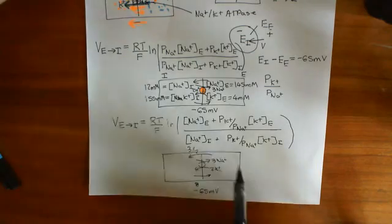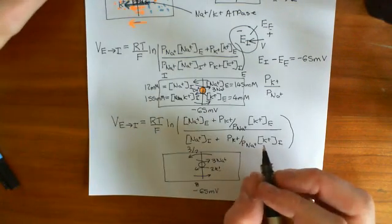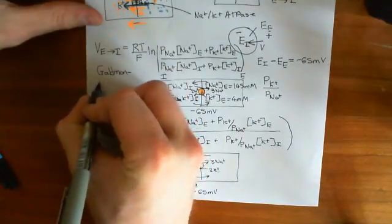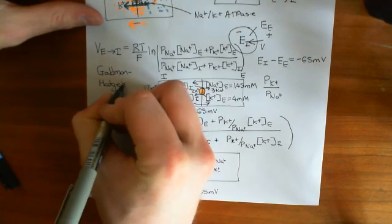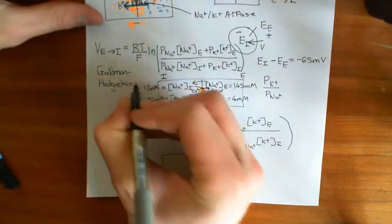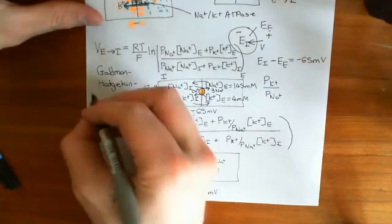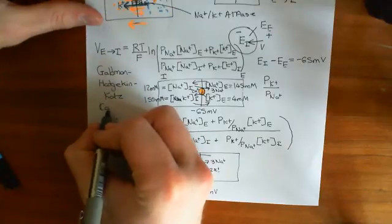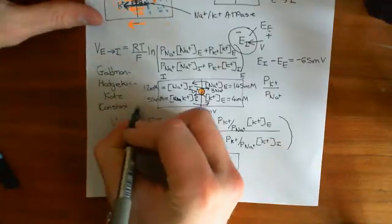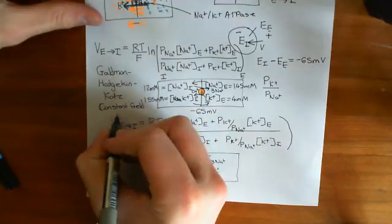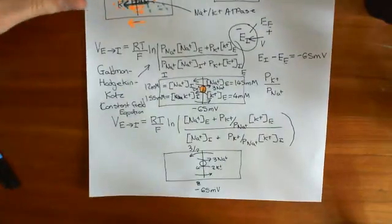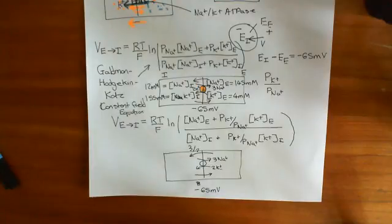In the next video, we will begin our derivation of the Goldman-Hodgkin-Katz constant field equation — sometimes just referred to as the Goldman equation or constant field equation, but this is its full name giving credit to all the people who helped discover it. It is a really good approximation for the resting membrane potential across cells, getting a very close answer.